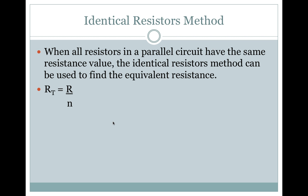Identical Resistors Method: When all resistors in a parallel circuit have the same resistance value, the Identical Resistors Method can be used to find the equivalent resistance. The total resistance equals the resistance divided by N, which is the number of resistors.